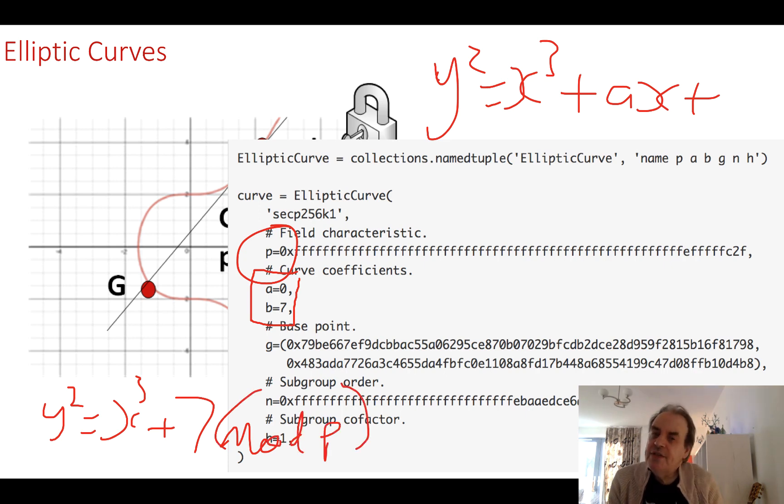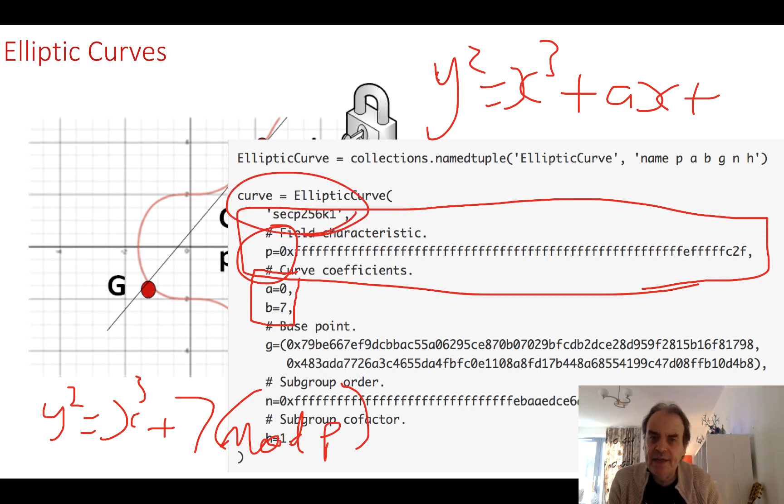That defines the maximum value that we can have. The security of our elliptic curve method will be defined through the size of that prime number. This is a method used within bitcoin and many blockchain applications.